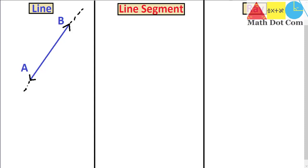So in order to represent the line we usually write it as AB with a double-headed arrow at the top. So this is the representation of the line while writing.